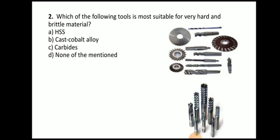Next question: which of the following tools is most suitable for very hard and brittle material? The answer is carbide. For the machining of very hard and brittle material, carbide is the most suitable material. Here you can see the various cutting tools which are made up of carbide.